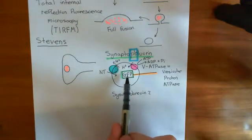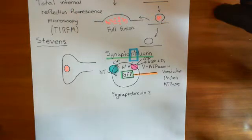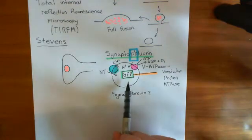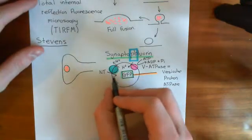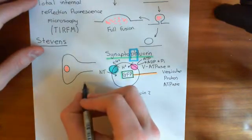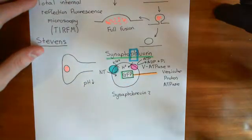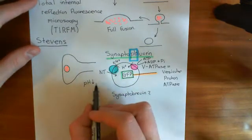When we put in our synaptofluorin protein — which is a modified chimera of synaptobrevin-2 with a green fluorescence protein — this protein is dependent upon the pH. When the pH is very low, remember a low pH corresponds to a high proton concentration. So when the pH is low, that means the proton concentration is very, very high, meaning you're acidic.